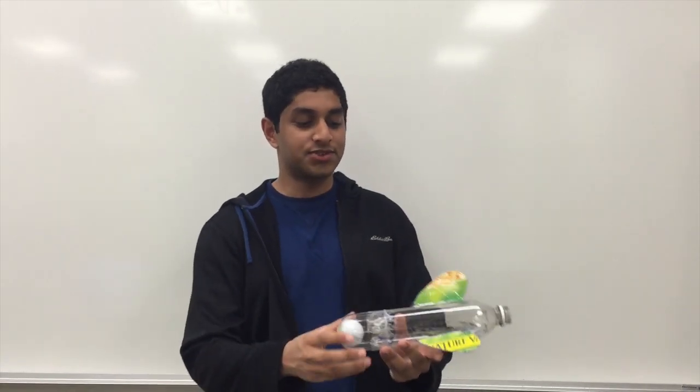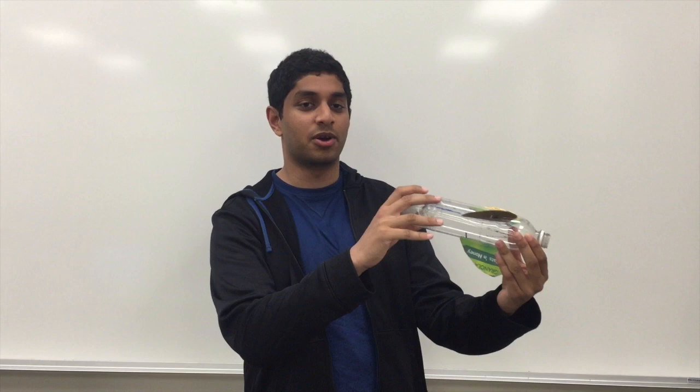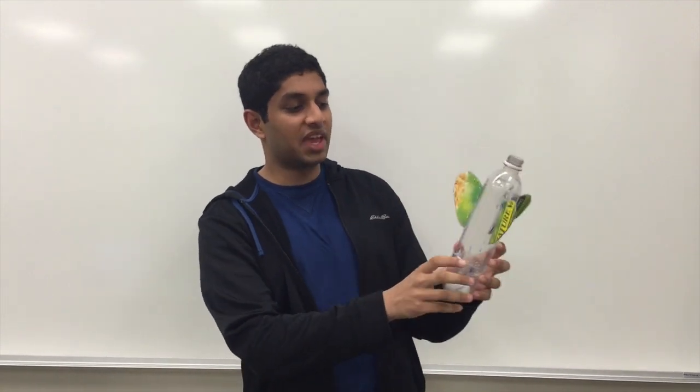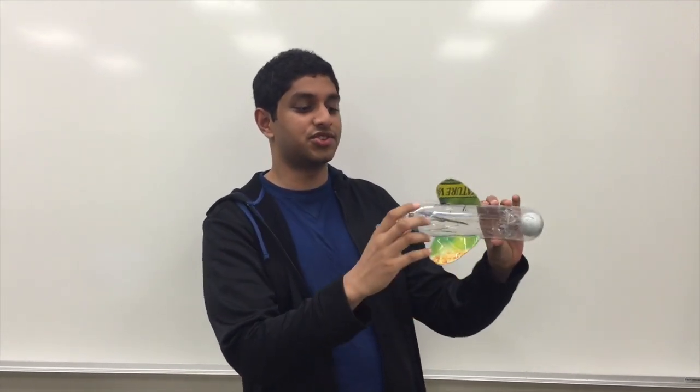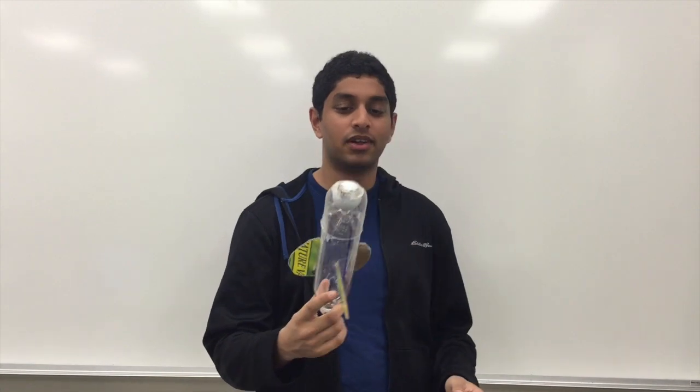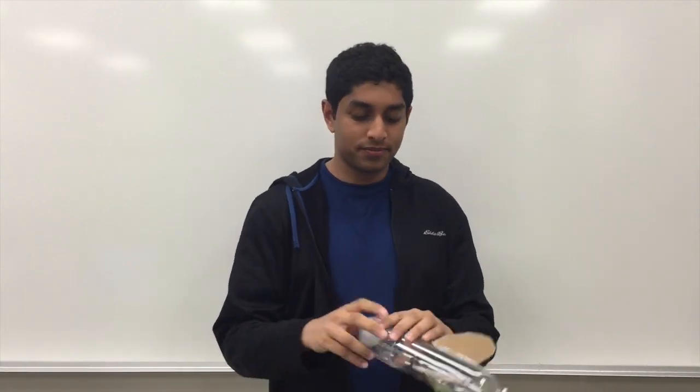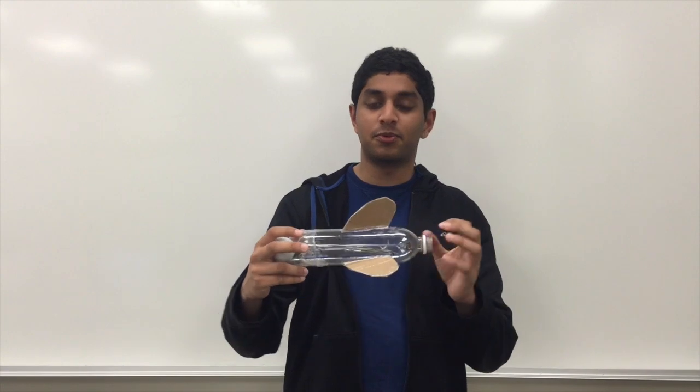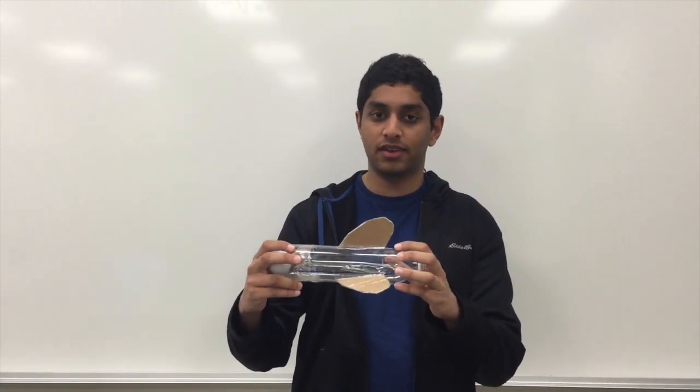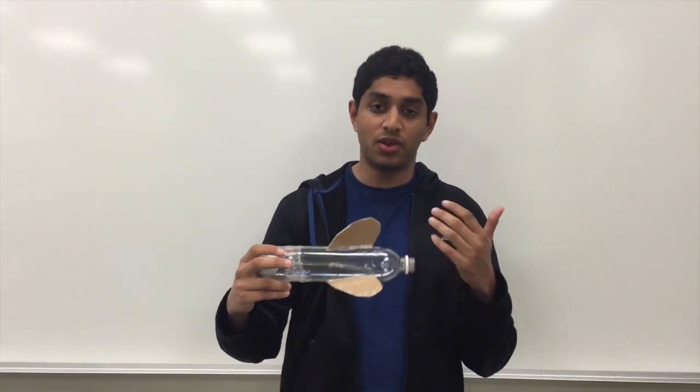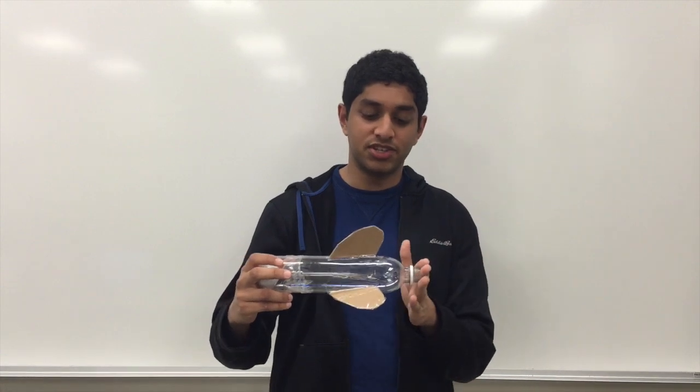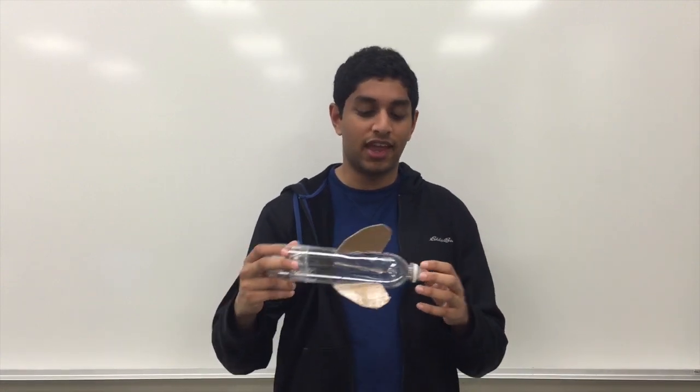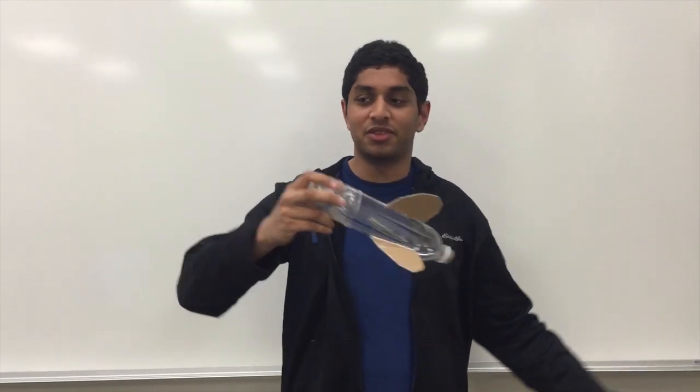So this is our rocket here, as you can see it's a really simple plastic water bottle rocket where we have these fins attached to a regular drinking water bottle with a golf ball in front. So in order to propel this rocket, we just put pressurized air and water in the back and when we want the rocket to be launched, we just let go of the pressure and all the water just shoots out the back and the rocket goes forward.